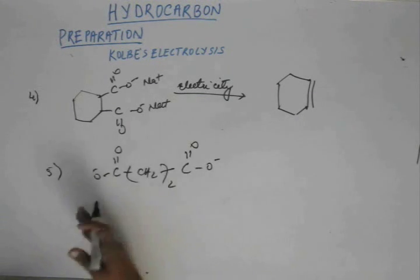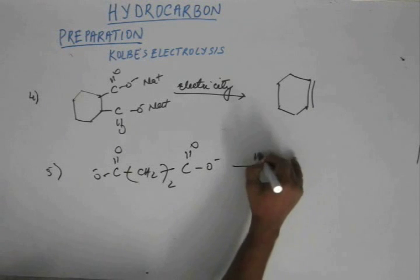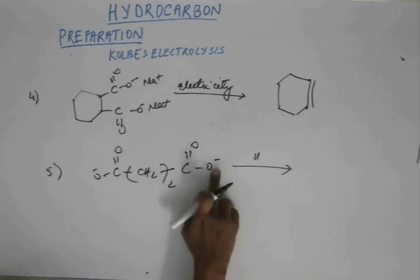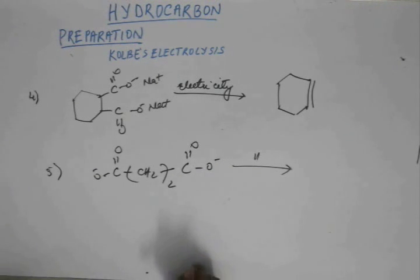There will be sodium or potassium ion. I am not writing that. And similarly we are passing electricity through this molecule. Now here also we have 2 carboxylate ions. So the whole process will be for both the carboxylate ions, oxidation of this oxide ion atom and then removal of carbon dioxide gas.